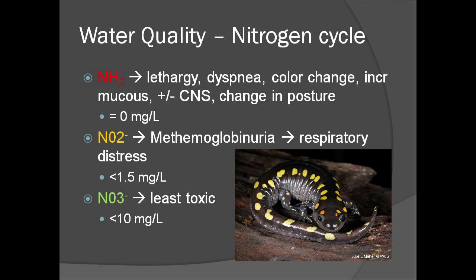Ammonia toxicity can present as lethargy, dyspnea, color change, increased mucus production, neurologic signs, and a possible change in posture in animals not fully submerged. Any measurable ammonia in the water is toxic. Nitrite toxicity causes methemoglobinemia, which is manifested as respiratory distress. Nitrites should be less than 1.5 mg per liter. Nitrate is the least toxic and can be removed with regular water changes; it should be less than 10 mg per liter.